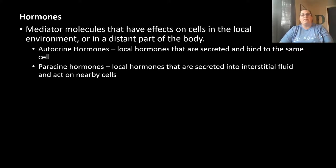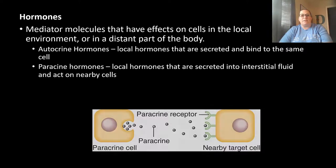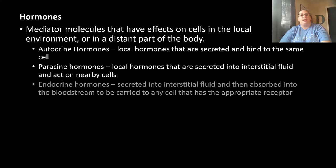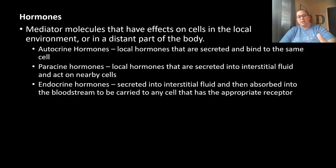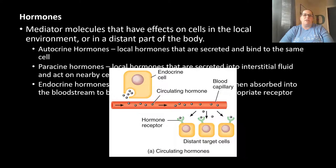Paracrine hormones are also local — secreted into the interstitial fluid and acting on nearby cells. The hormone travels within the same vicinity but targets a neighboring cell. Endocrine hormones travel the long distance: they enter the interstitial fluid, then the bloodstream, and travel to a distant target cell that has the appropriate receptor. The endocrine cell releases the hormone, which enters the blood and travels until it reaches that distant tissue.